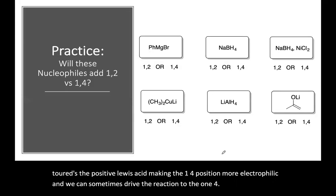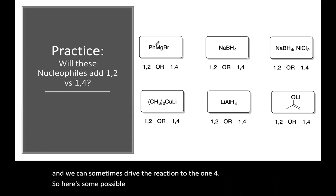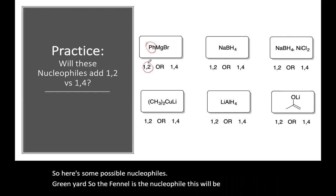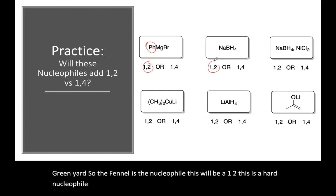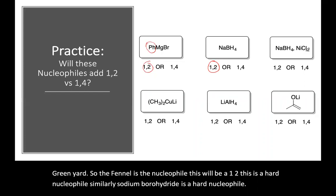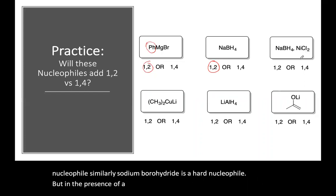So here's some possible nucleophiles. Grignard, so the phenyl is the nucleophile. This will be a 1,2. This is a hard nucleophile. Similarly, sodium borohydride is a hard nucleophile, but in the presence of a Lewis acid such as nickel chloride, this can give you the 1,4 position, 1,4 addition.